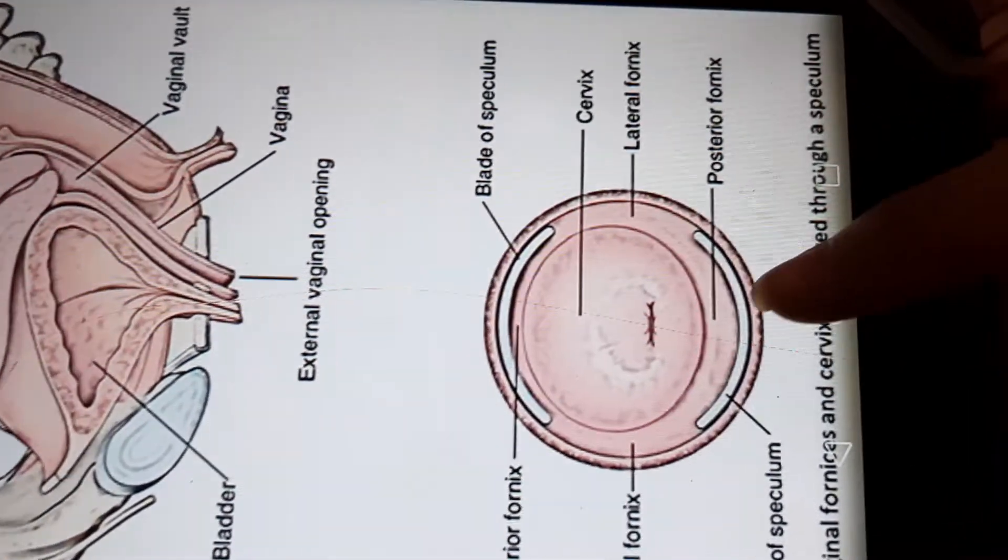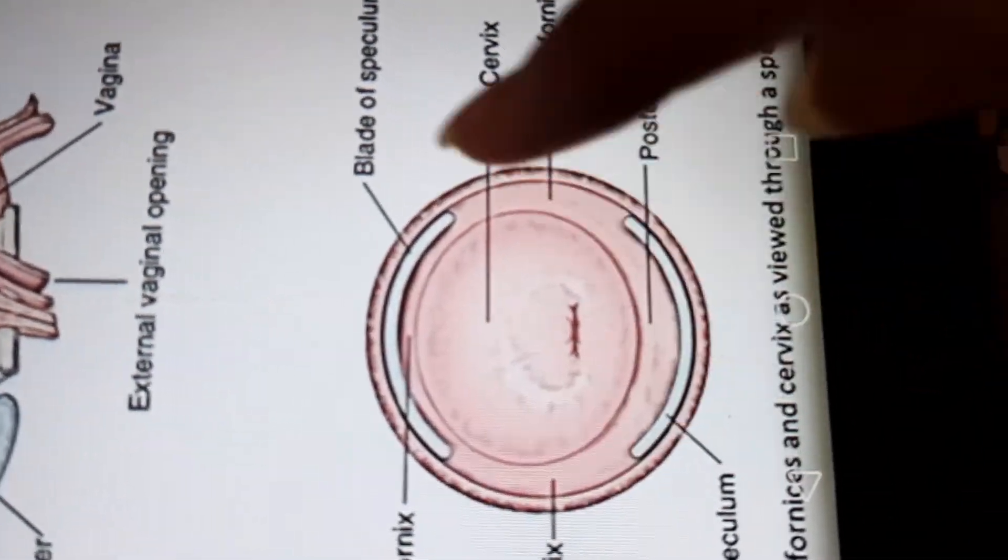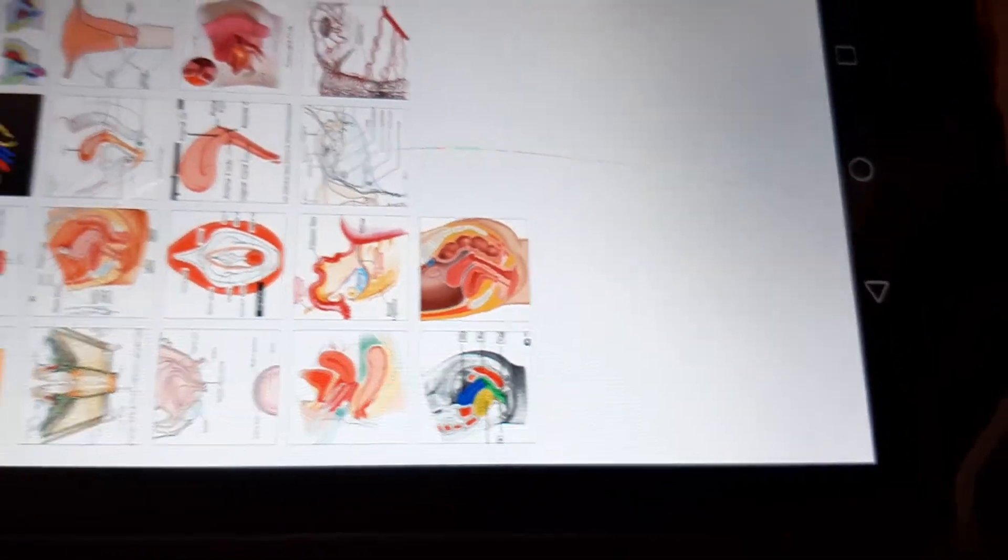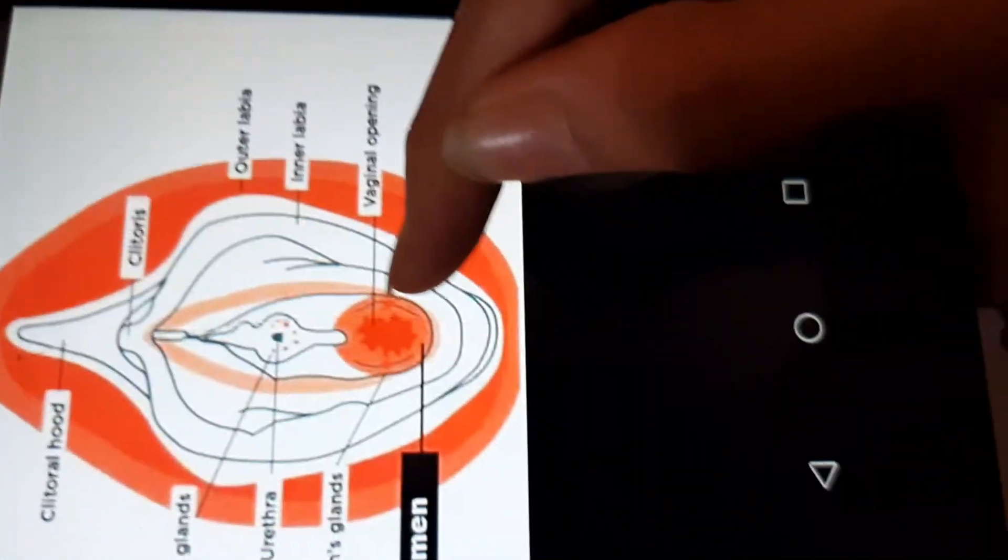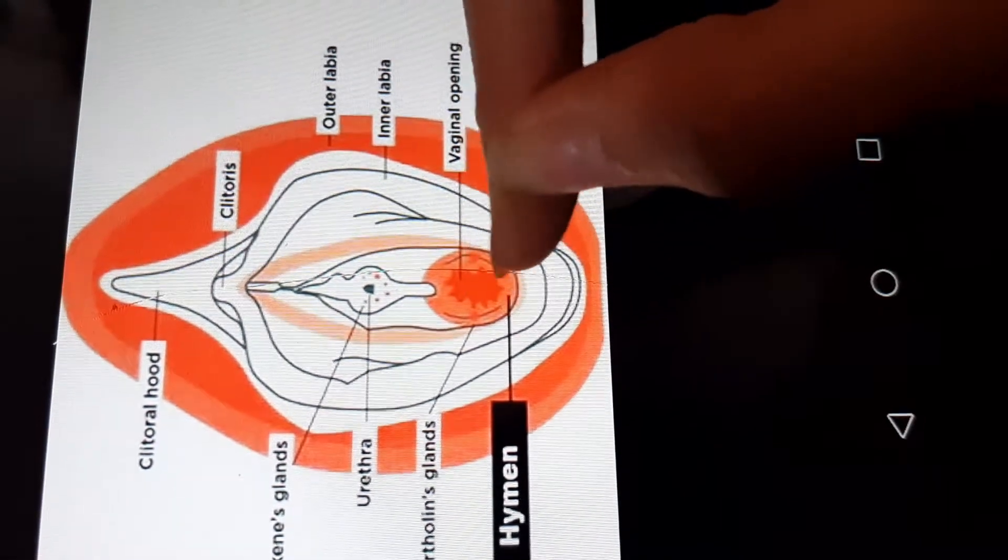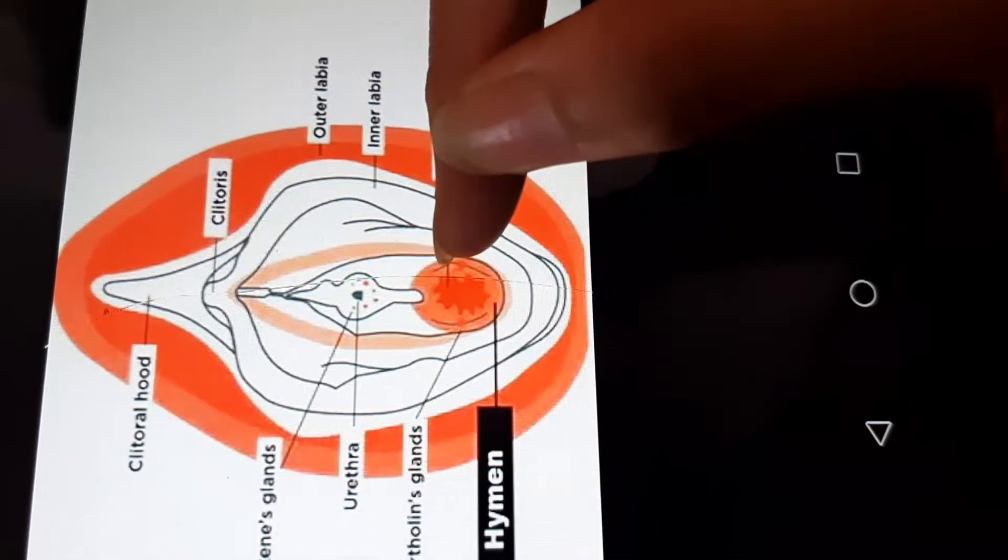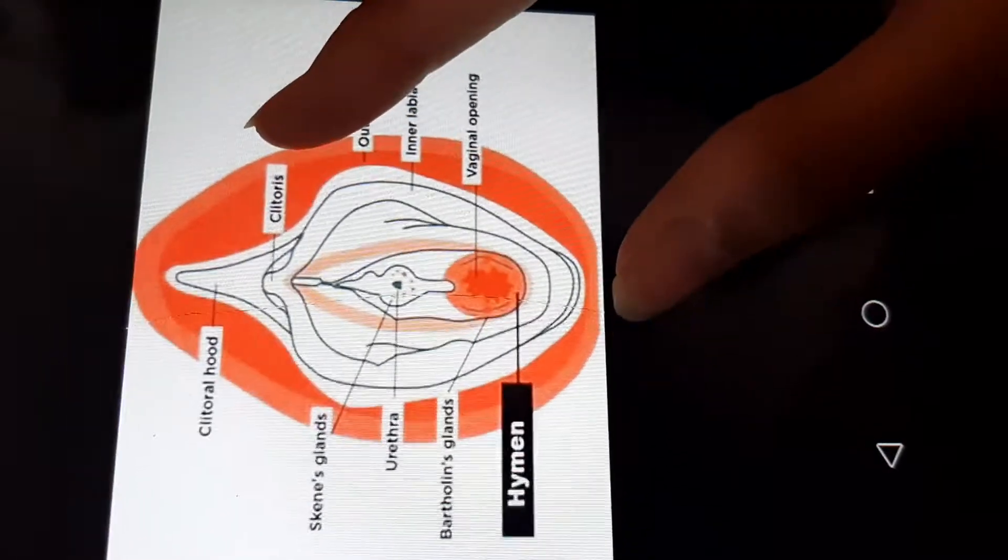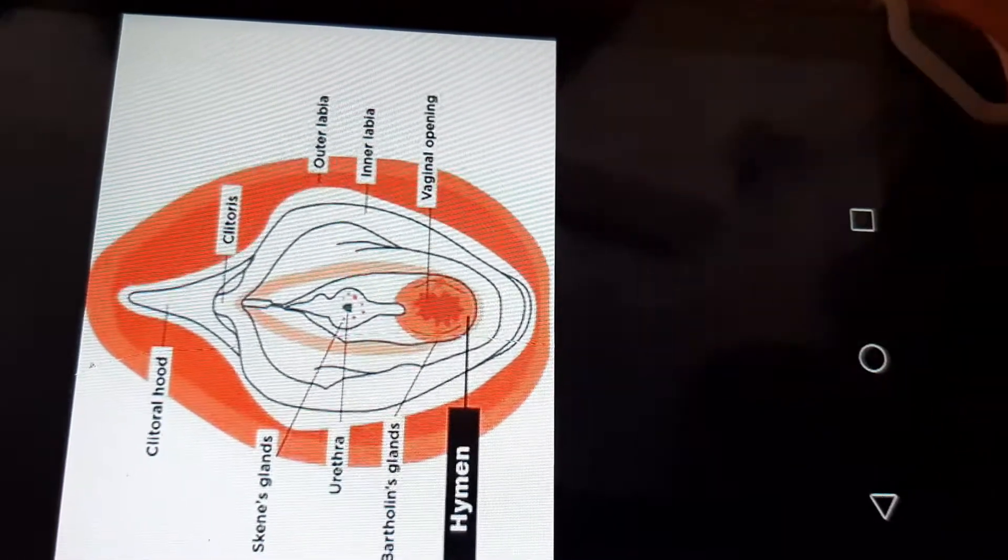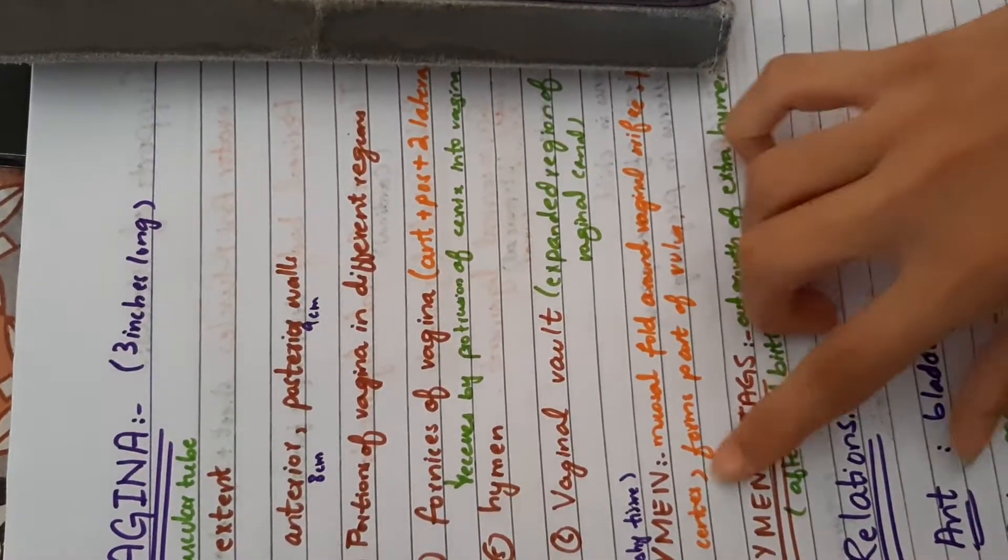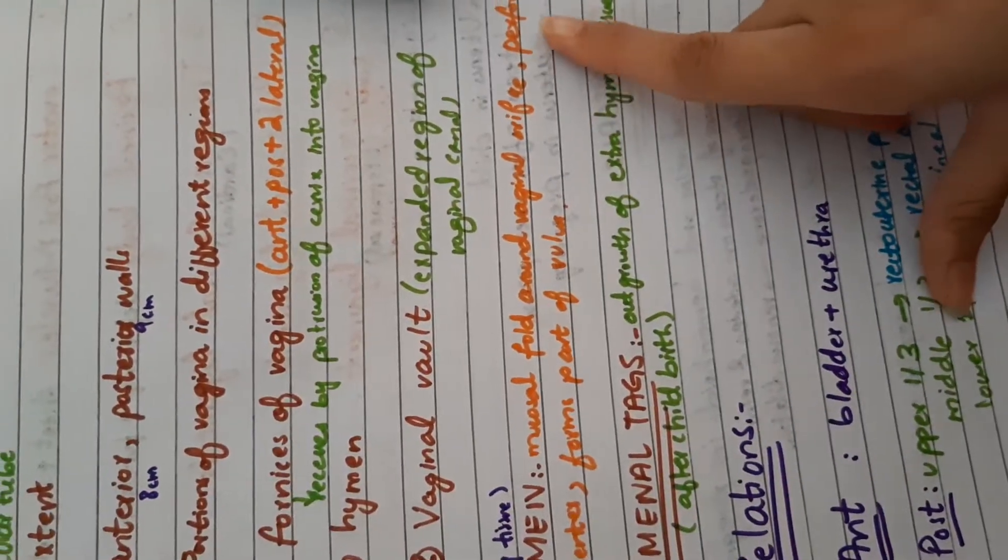This is posterior fornix and lateral fornix. What is hymen? Hymen is a mucosal fold that surrounds the vaginal opening. Hymen is a mucosal fold which is perforated so that vaginal opening is present. This mucosal fold breaks during sexual intercourse. After childbirth, it consists only of tags called hymen tags. This is a mucosal fold around the vaginal orifice.